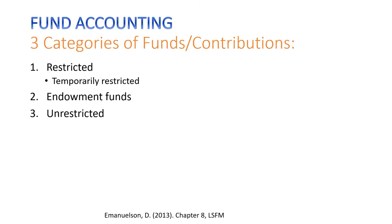In fund accounting there are generally three categories of funds, or contributions. Accounting for these three categories makes balance sheets for non-profit and public organizations more complicated compared with for-profit, which only has one fund. Organizations need to keep track of multiple funds generating reports similar to balance sheets and income statements for each fund, and each fund usually has its own budget. The three categories are restricted, endowment, and unrestricted funds.